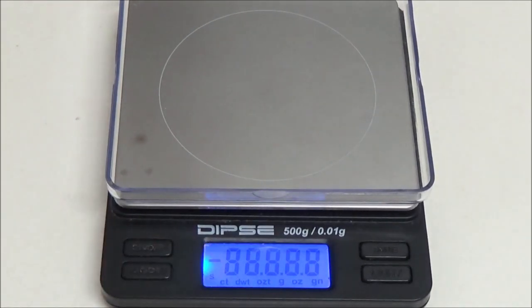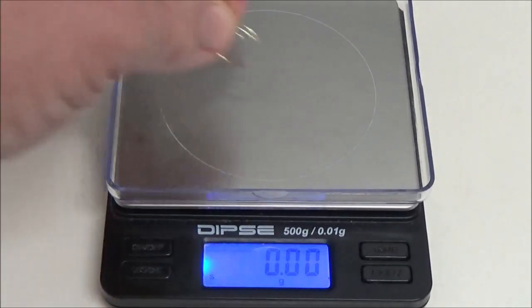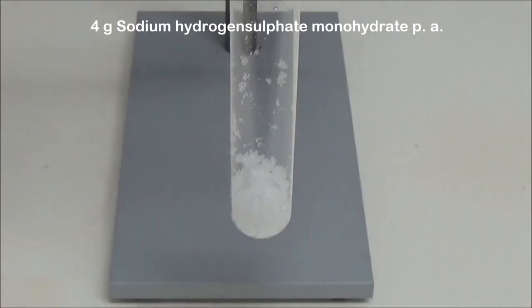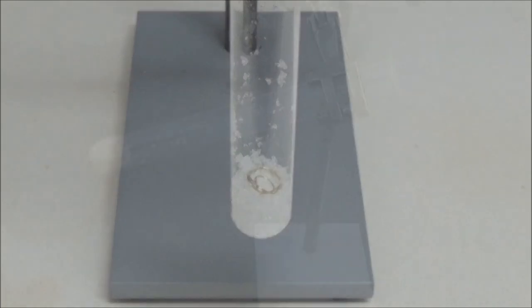At the beginning a short piece of brass wire is cut off and weighed. Here it is exactly 0.16 grams. 4 grams of analytical grade sodium hydrogen sulfate monohydrate is weighed out, placed in a test tube and the piece of wire is added.